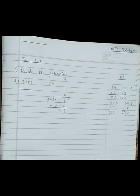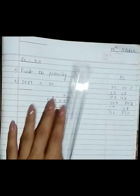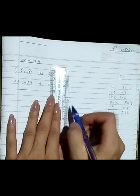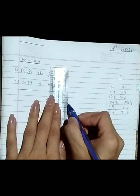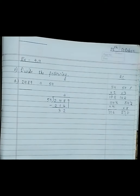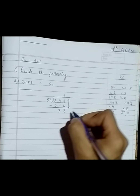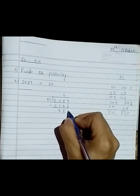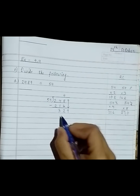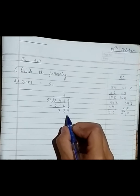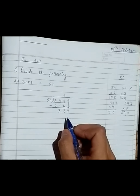We don't need to write the leading 0. Then take down the number in the ones place and write it right next to 32, giving us 329.